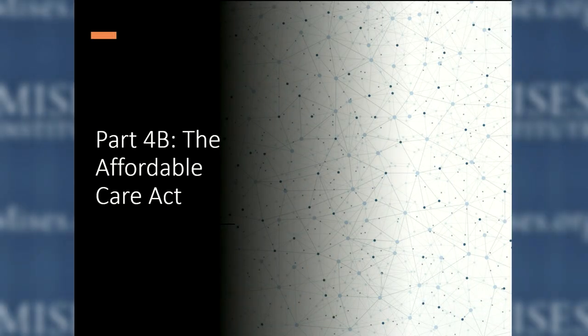Part 4B: the Affordable Care Act is really just an expansion of Medicaid if you get down to what actually happened. There were a number of restrictions on insurance companies — they had to ignore pre-existing conditions, and everybody was required to obtain health insurance, although the penalty for not getting health insurance was dropped to zero in 2019. A lot of the pieces of the Affordable Care Act were fairly dramatically changed. If you remove the penalty on not getting health insurance, that's a pretty significant change. Not all states adopted the Medicaid expansion — as you can see, a lot of those are Southern states that said no thanks.